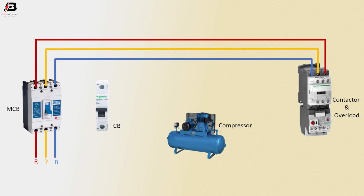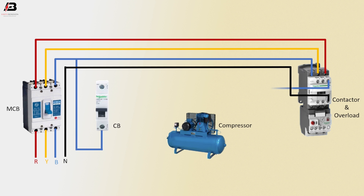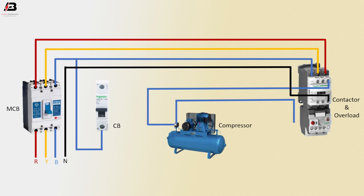Three phase goes to magnetic contactor. Neutral connection to magnetic contactor coil connection. B phase connection from circuit breaker to magnetic contactor. Three phase connection outgoing from magnetic contactor to compressor. Three phase connection outgoing from compressor to overload relay, and from overload relay back to compressor.